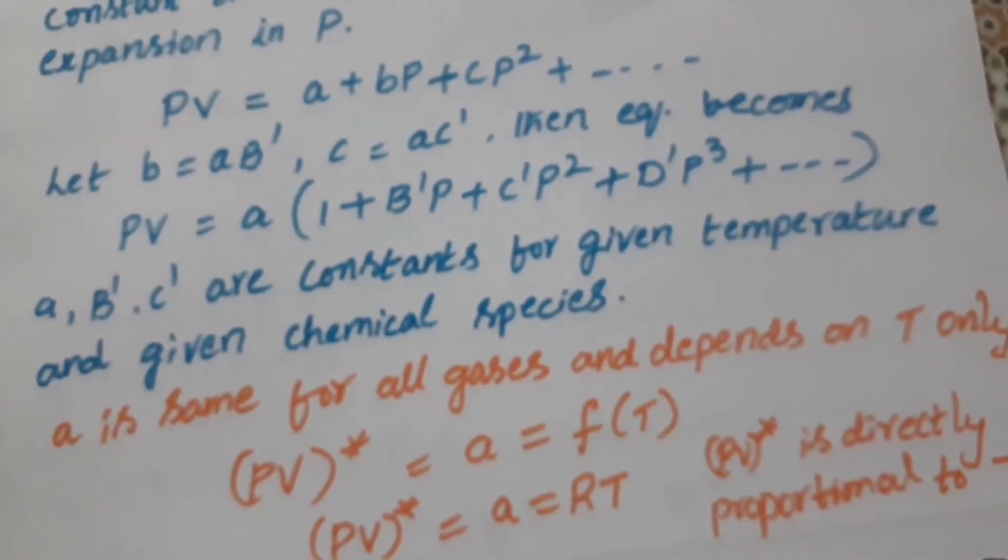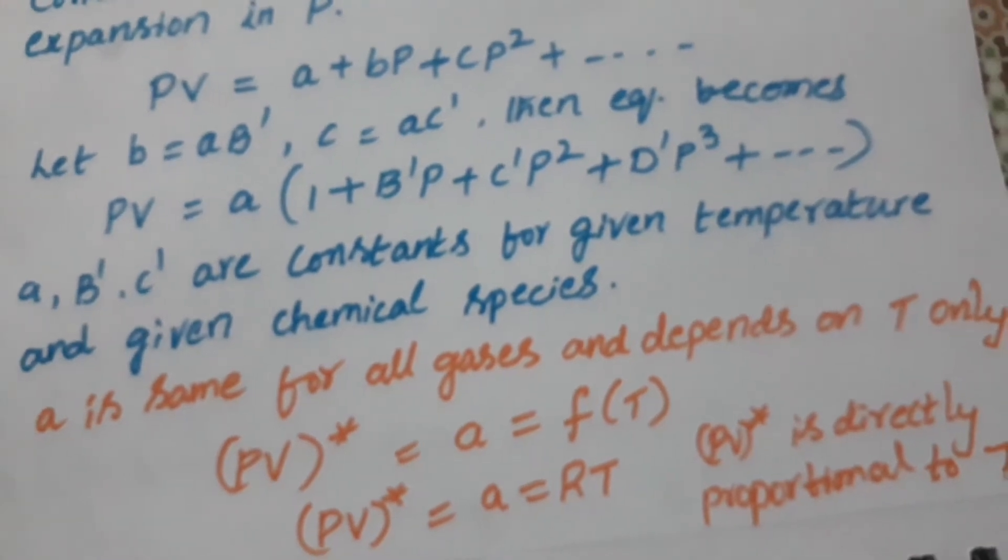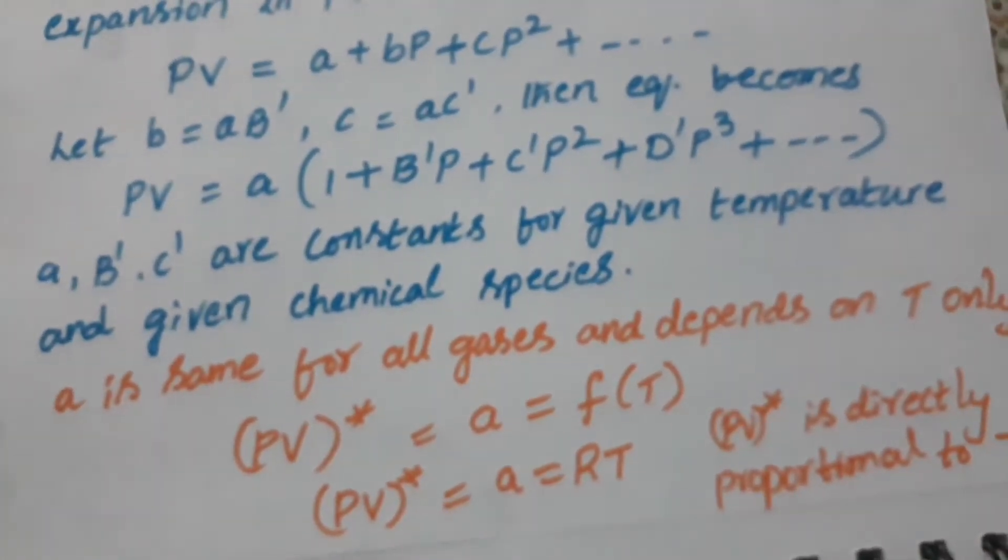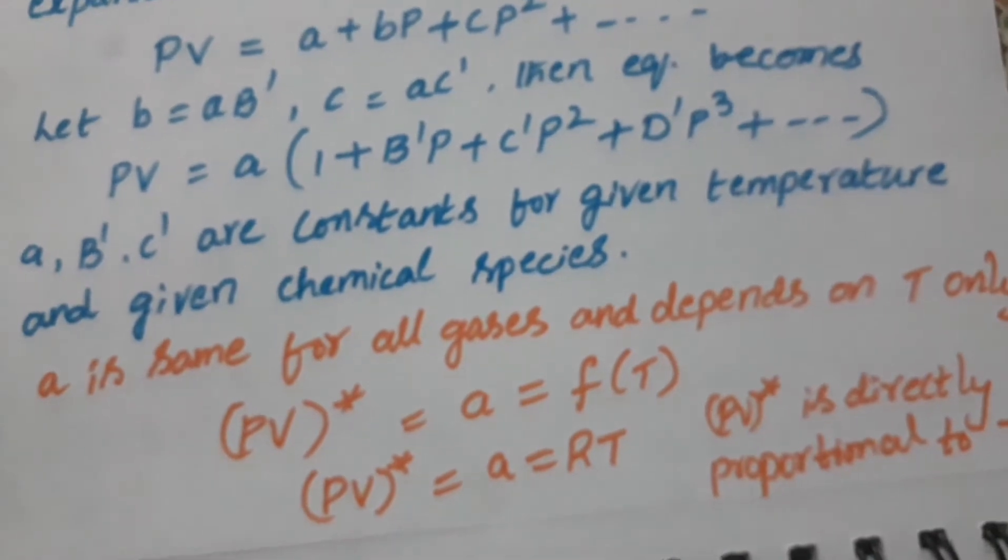So here A, B', C' are constants for a given temperature and given chemical species.